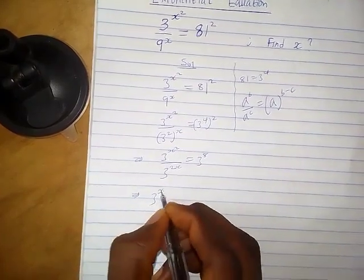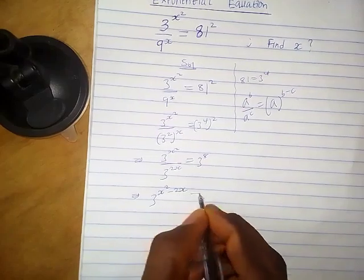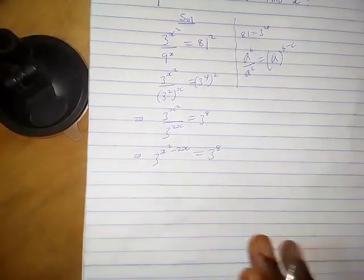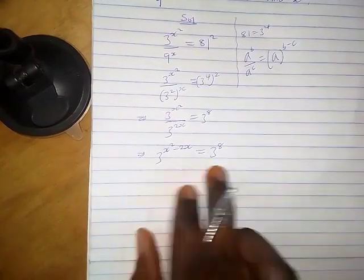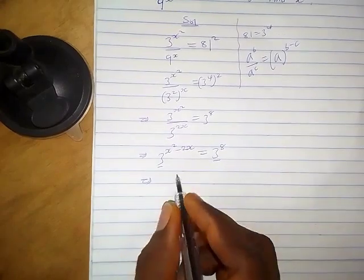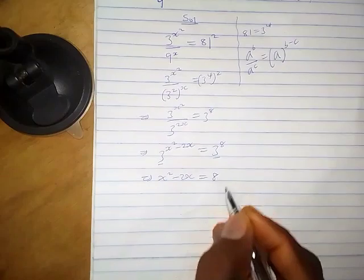So we have 3 raised to the power x squared. When 2x goes to the top it becomes negative. So we have minus 2x equals 3 raised to the power 8. The base on both left and right are the same, so we can equate the powers. We have x squared minus 2x equals 8.